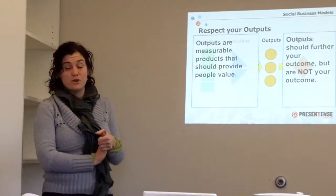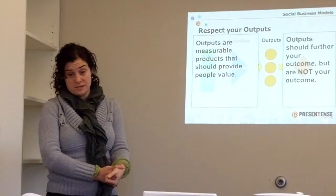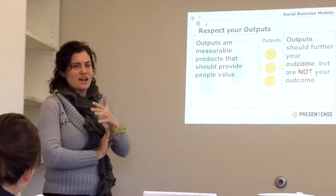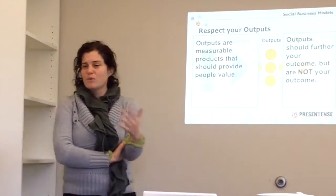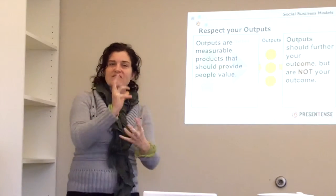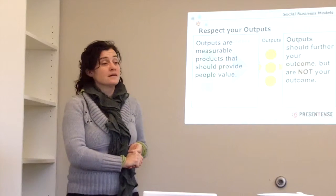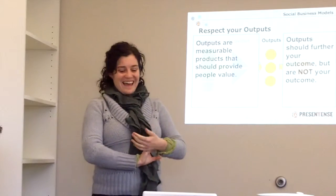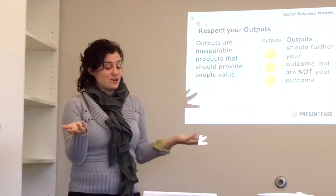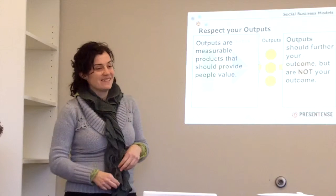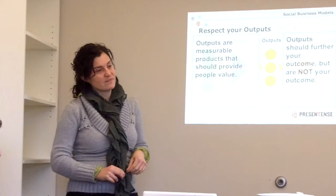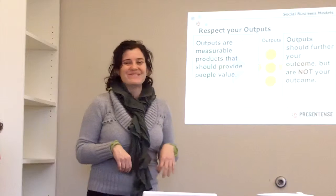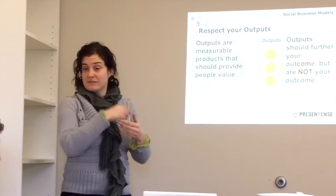R-E-S-P-E-C-T your O-U-T-P-U-T-S. Can someone just give me an example from their venture? What is an output — one of the things that come out of the machinery of what you're doing? Fellows. Live fellows. So the output — and we can measure. What can we measure about the fellows? How many there are, how many get funded, how many are successful two years out? All sorts of things. Those are outputs. You know, how tall they are — we can really quantify that.